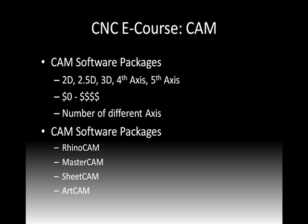Since we're covering CAM today, let's talk about the different CAM software packages. Similar to CAD, there's 2D, 2.5D, 3D, and you get into fourth and fifth axis — this depends on your CNC machine and is usually an add-on. There are free options and you can spend up to about infinity. The dollar amount generally depends on the number of axes: 2D CAM tends to be inexpensive, but if you want 5-axis, get ready to open your wallet. Some familiar packages on the market include RhinoCam, MasterCam, SheetCam, and ArtCam.